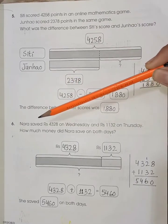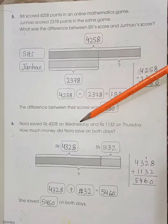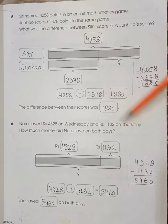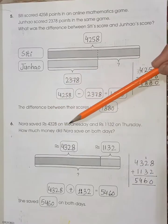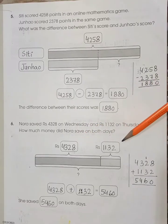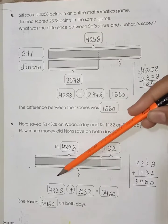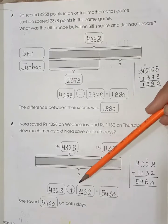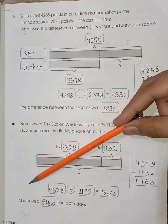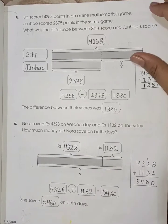Word problem number 6: Nora saved 4328 rupees on Wednesday and 1132 rupees on Thursday. How much money did Nora save on both days? So 4328 plus 1132 — when we add both numbers we get the answer that she saved 5460 on both days. Page number 34.